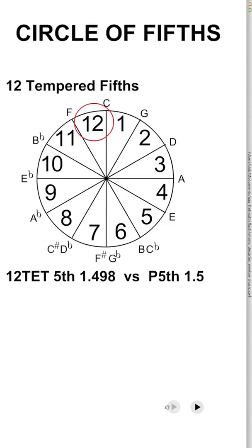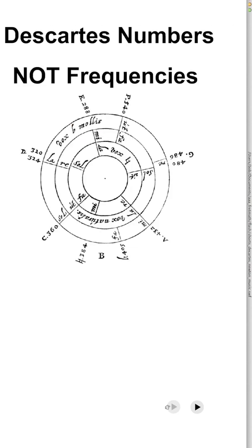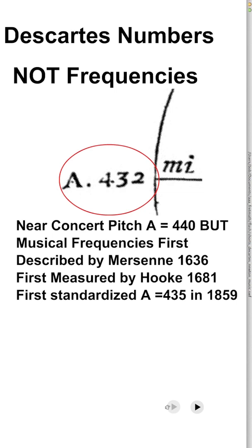They're not a circle of fifths, where 12 tempered fifths equates with 7 octaves, or the 2-to-1 ratio. Frequencies were not really measured until 1681.